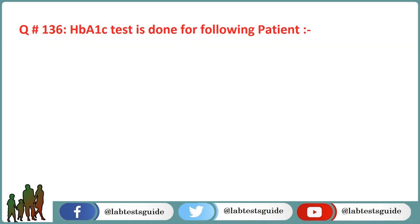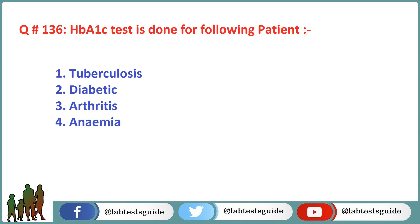Next question is 136: HbA1c test is done for which patient? Option 1: Tuberculosis. Option 2: Diabetic. Option 3: Arthritis. Option 4: Anemia. The correct answer is Option 2: Diabetic.